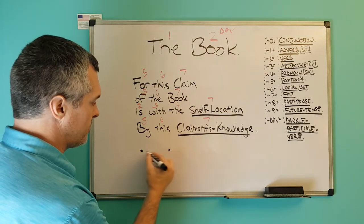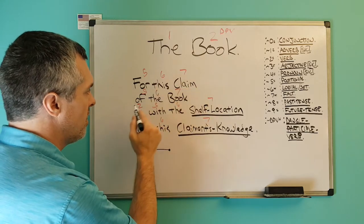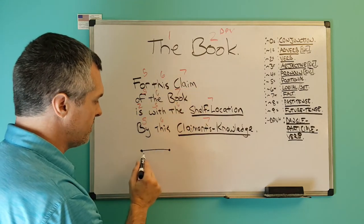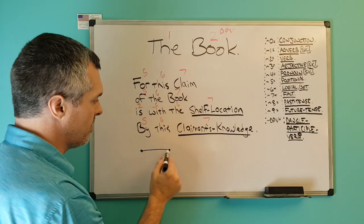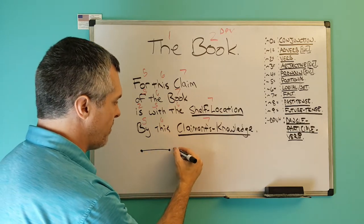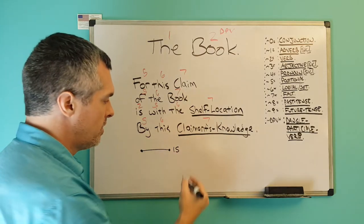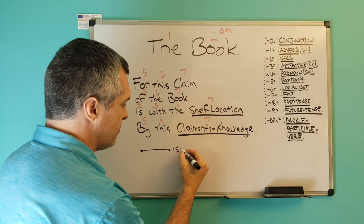For this claim of the book represents these two lines. For this claim of the book, now we put our verb of the thinking in there: is. Now we can move on into the rest of the claim along the same straight line.